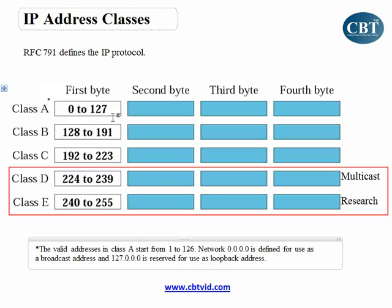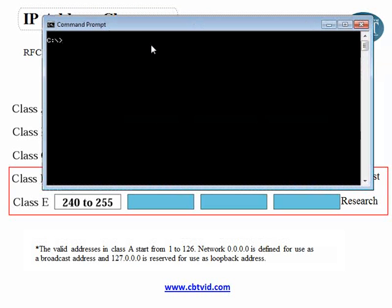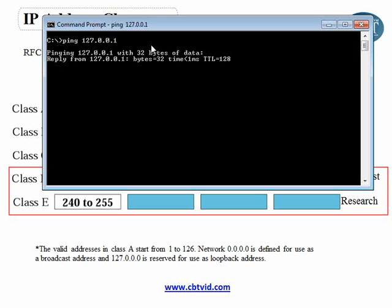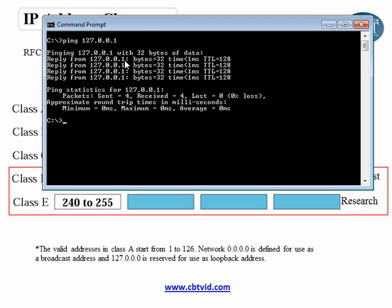There is one exception in Class A. In some books, you might see that Class A starts from 1 to 126. The reason is that addresses starting from 0 are reserved and used for broadcast. Addresses starting from 127 cannot be assigned to any network — these are reserved for loopback. If I want to check that TCP/IP protocol suite is correctly installed on my computer, I can ping 127.0.0.1. If I get a reply, I know the protocol suite is correctly installed.